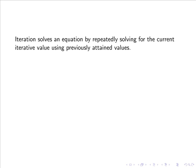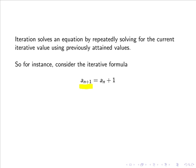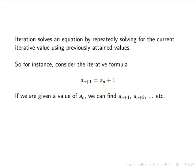Iteration solves an equation by repeatedly solving for the current iterative value using previously attained values. Consider the iterative formula aₙ₊₁ = aₙ + 1. Here aₙ₊₁ is a solution at time or position n+1, while aₙ is a solution at position n. Hence if we are given a value of aₙ, we can find aₙ₊₁.